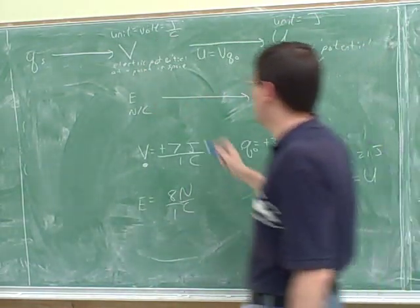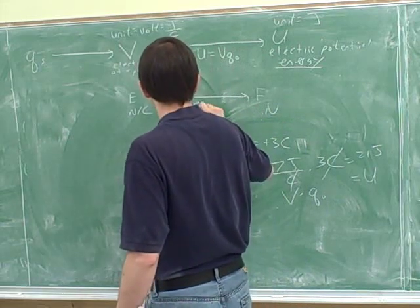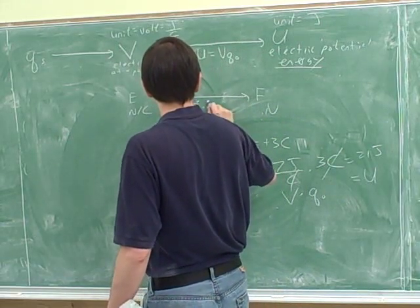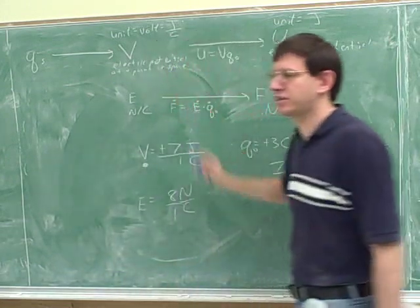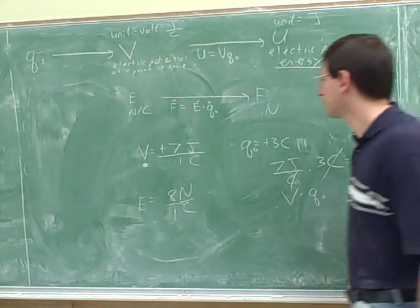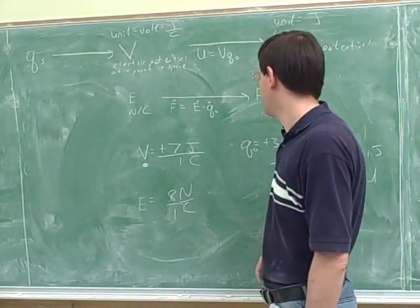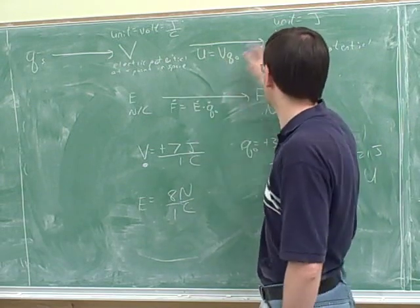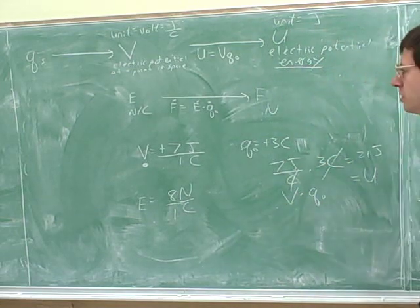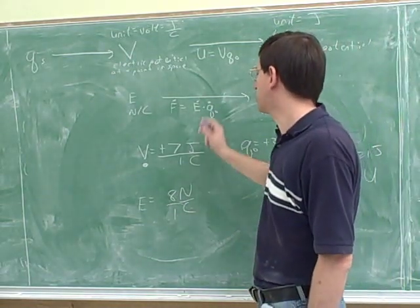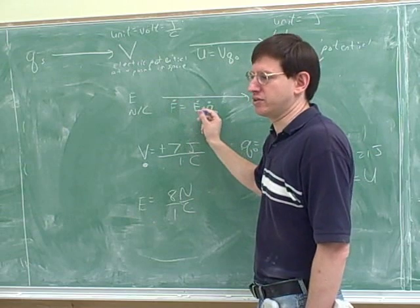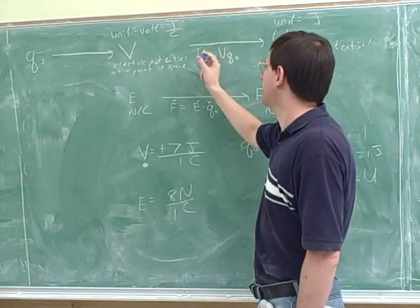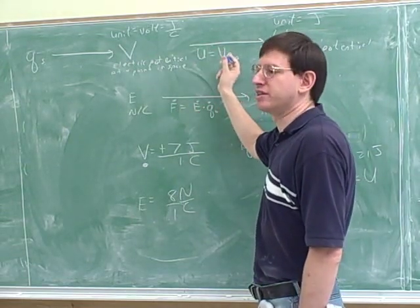And that should remind you of the formula that related force and field. Again, since these are both per coulomb, if you multiply by the number of coulombs, you get the more basic concept of energy or force. One difference, again, though, is that when we used this formula, we were just focusing on magnitudes.